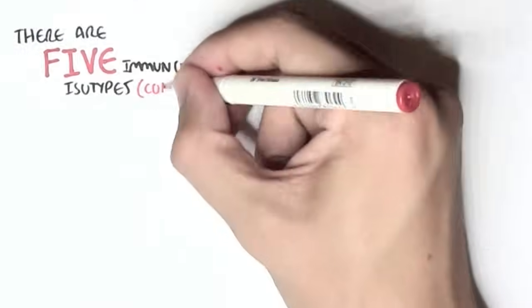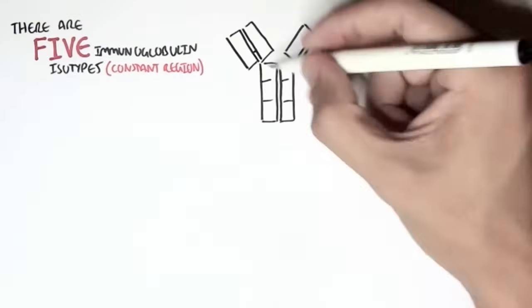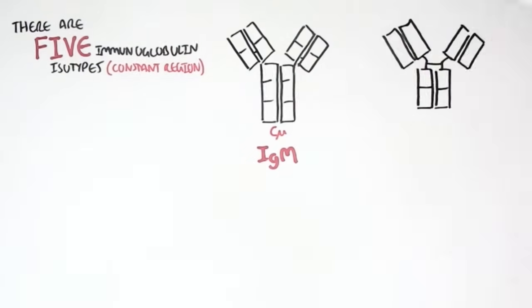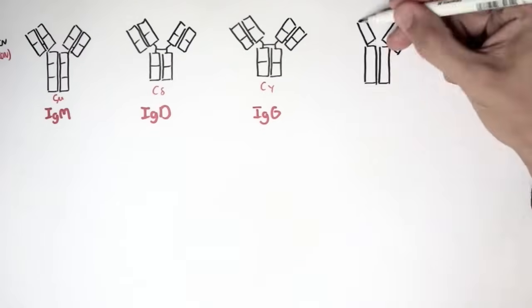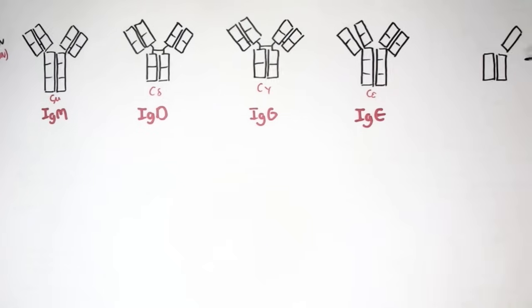So just recapping, there are 5 immunoglobulin isotopes based on the constant region of the antibody. These are IgM, IgD, IgG, IgE, and IgA.